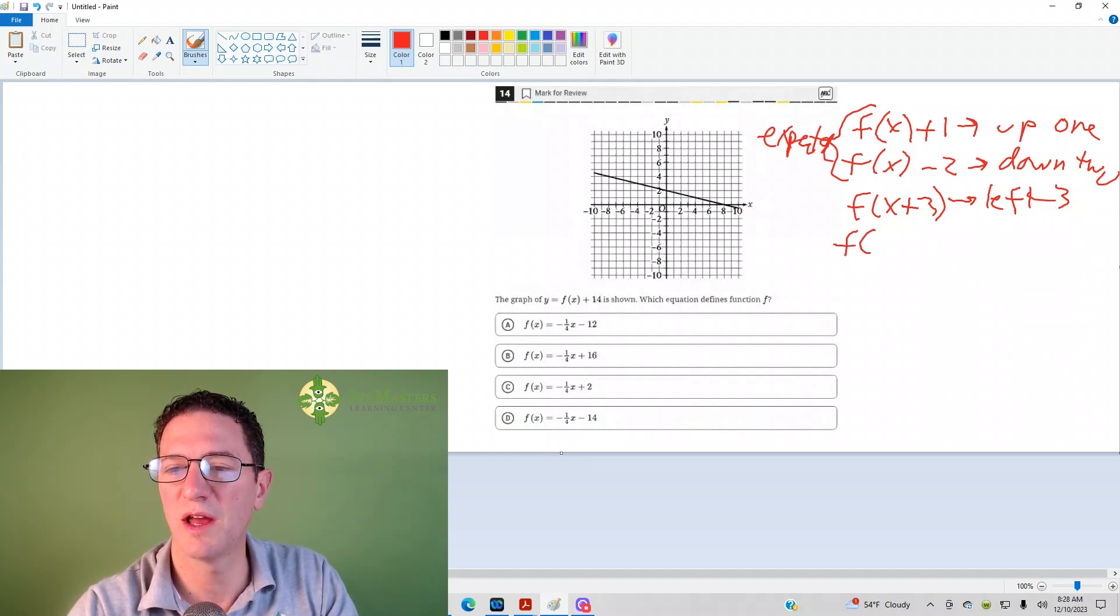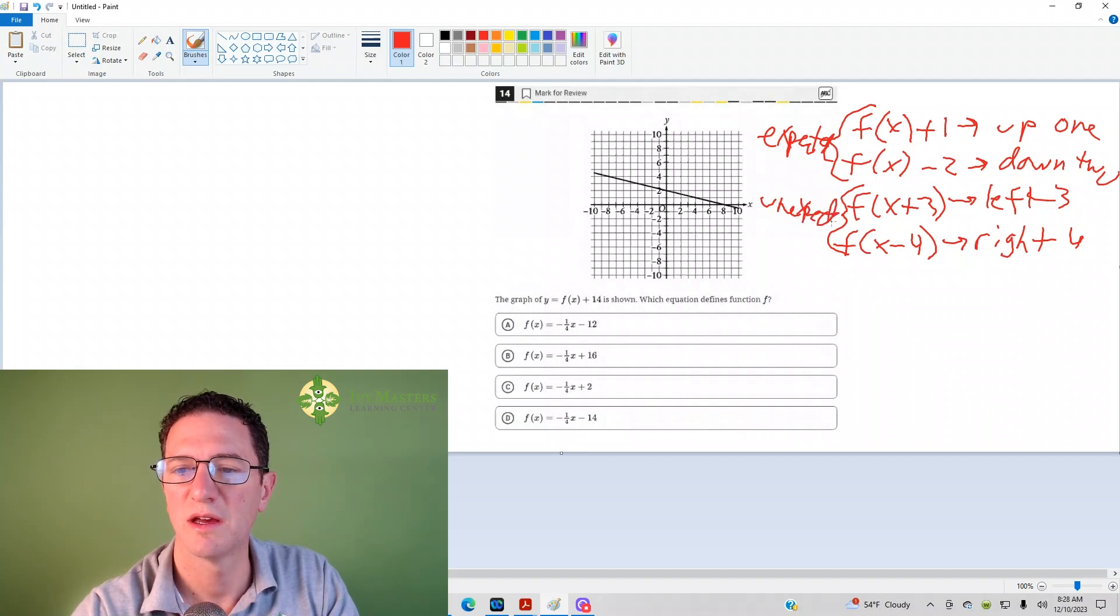And then, let's say we've got f of x, and inside the parentheses, we've got x minus 4. So it would naturally follow that here you're going to go right 4. Now, this is probably not what you would expect. So it's like this is unexpected.